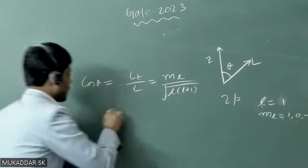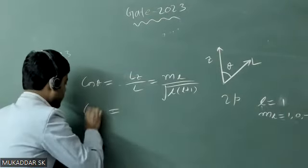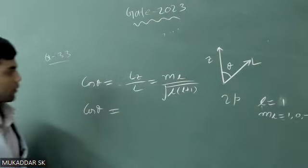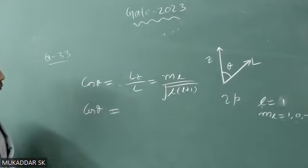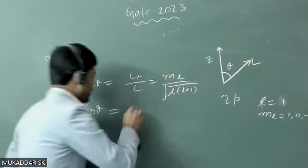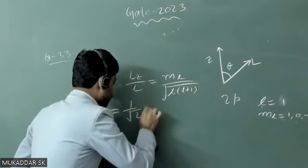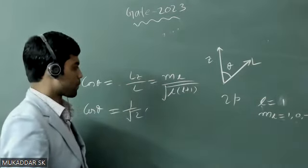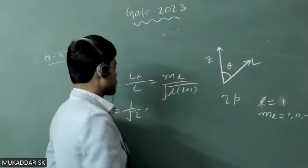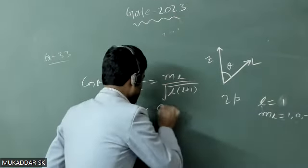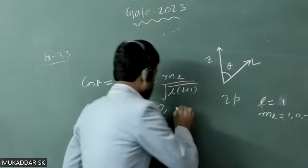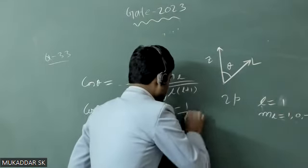Now substituting these values, when ml equals 1, cosine theta equals 1 by root 2. When ml equals 0, it equals 0. When ml equals minus 1, it equals minus 1 by root 2.